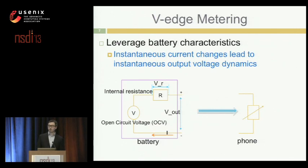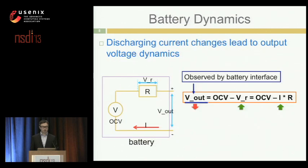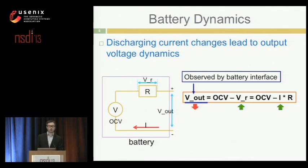Let's look at a simple equivalent circuit of the battery and smartphone. We have the OCV (open circuit voltage), which represents how much energy is left in the smartphone — it is relatively constant over a short time period. There is also R, representing the internal resistance inside the battery. The V_output is the output voltage to the smartphone, which is the reading value provided by the battery interface — the value we get from the operating system and applications.